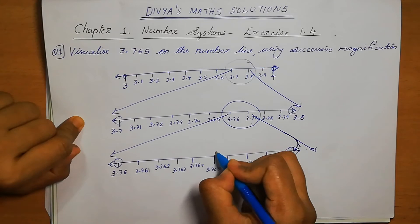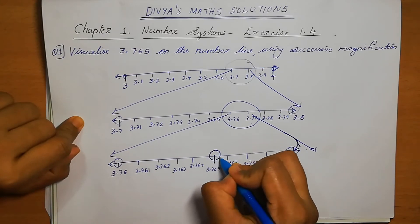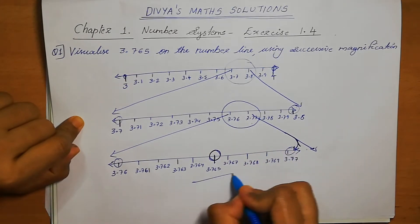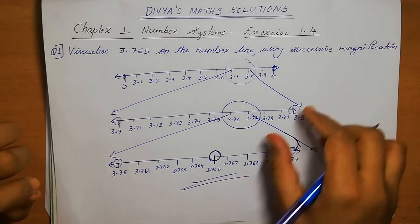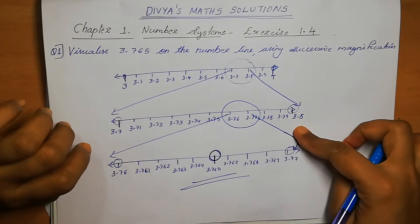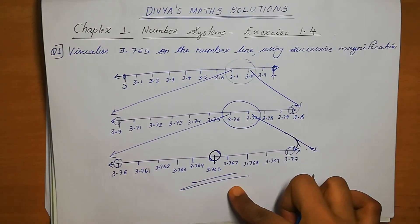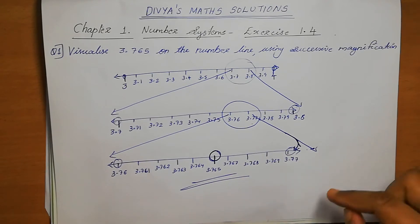This is 3.765. So this is our answer. By successive magnification we find the number 3.765 on the number line. This is the answer.